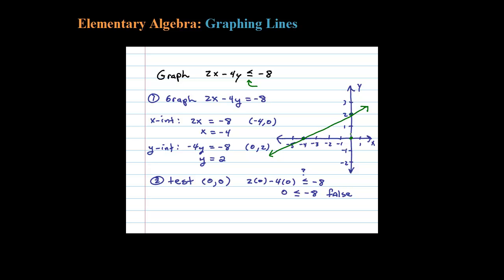What's that telling me? That tells me the origin is not part of the solution, so I cannot shade the region below the line. I'm going to shade the region above the line. So any ordered pair in this region up here should solve the original inequality, including the boundary. Go ahead and try it.